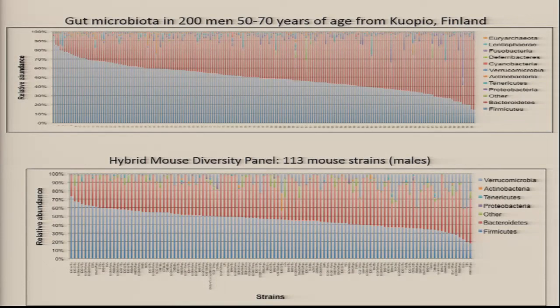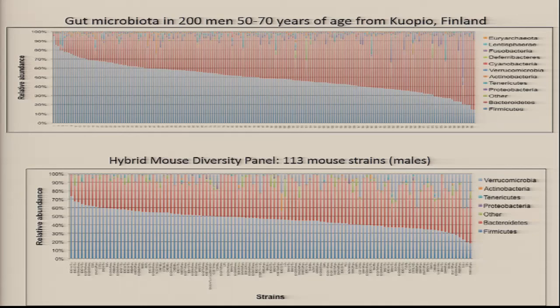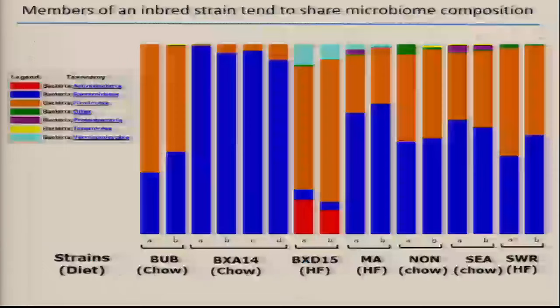If you look at our panel of 113 inbred strains, it's rather similar to the variation we observe in these 200 men from Korpio, Finland — a little bit less diversity, fewer significant phyla than in the human population, but still a lot of variation. If you pick individual strains and look at variability within strains, it's rather small compared to the variability between strains.